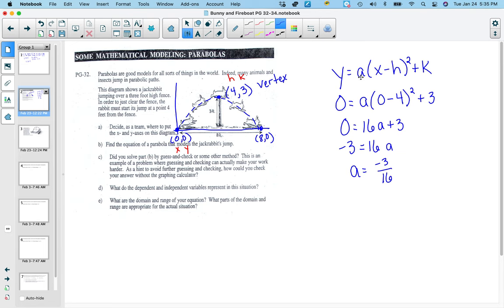So we get negative 3 sixteenths. And we get that that's the value of a. And that's what I needed to know. I needed to know what this value is, the stretch or compression for that. So now I get y equals negative 3 sixteenths. And I'm going to fill in my hk, my vertex. We have x minus 4 quantity squared plus 3. And this quadratic equation right here would model the path that the rabbit would jump.